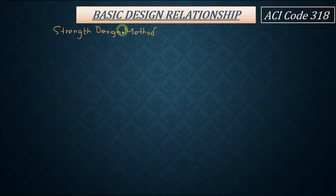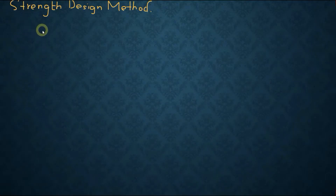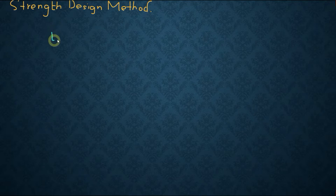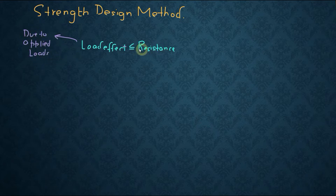In this lecture, I am going to go through the basic design relationship and the strength design method, which is extensively used in the analysis and design of reinforced concrete structures. The basic design relationship states that the load effect is less than or equal to the resistance. This load effect comes from the applied loads, and the resistance is provided by the material — in the case of reinforced concrete, that is steel and concrete together.